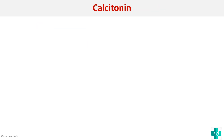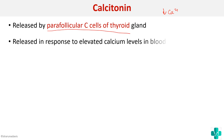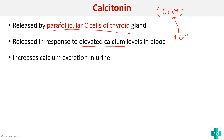The next hormone involved in calcium homeostasis is calcitonin. Calcitonin decreases the calcium level and is released by the parafollicular C cells of the thyroid in response to elevated calcium levels. Whenever calcium in the blood is high, calcitonin acts to restore it to normal by increasing calcium excretion in the urine.